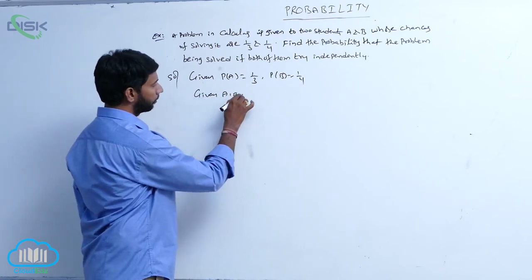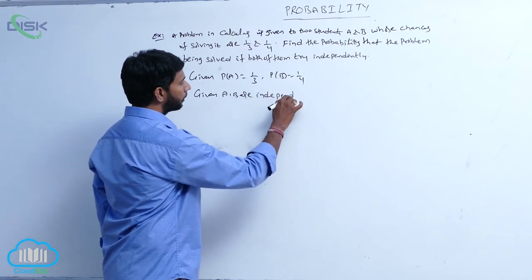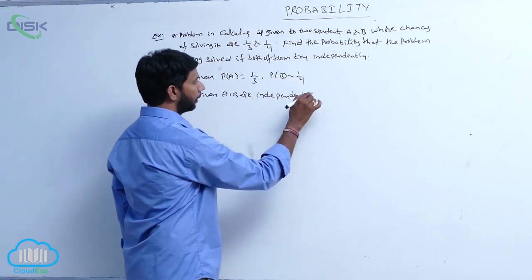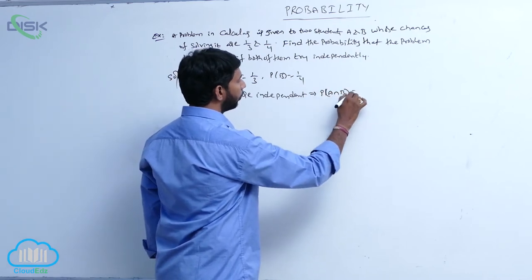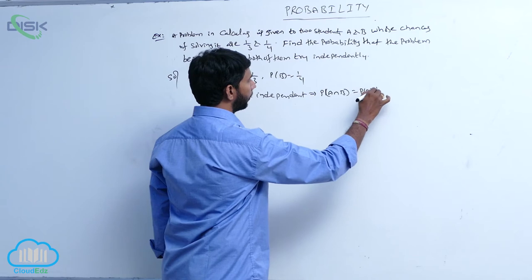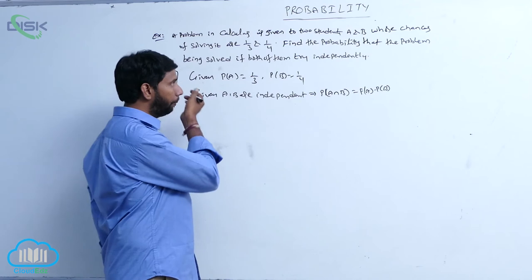A, B are independent, that implies P of A intersection B is equal to P of A into P of B.